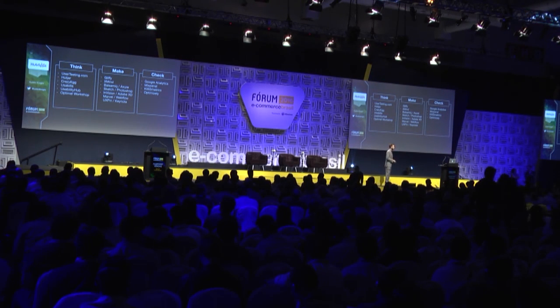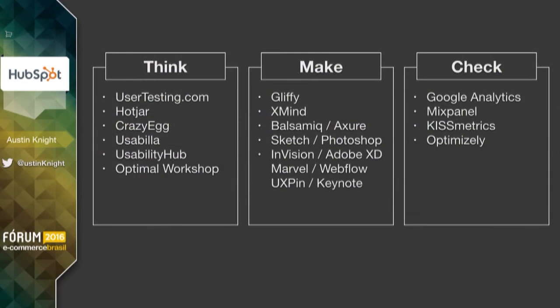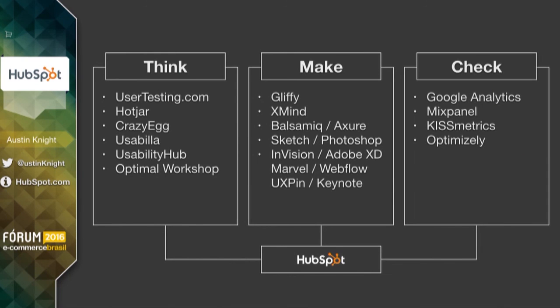Sketch and Photoshop are the most common tools for higher-fidelity mock-ups. And there are a ton of prototyping tools — InVision, Adobe XD, Marvel, Webflow, UX Pin, and even Keynote, which comes on any MacBook you buy, can be used for creating prototypes. When you get to the Check phase and are ready to see how things performed, Google Analytics is completely free. Mixpanel is a good custom implementation if you want to have stuff that goes between software and your site. Kissmetrics is a really good funnel creation tool. And Optimizely is a nice A/B testing tool. If you get to a point where you want to do all of this in a single spot, you can use a tool like HubSpot — we've actually built our platform around this entire ethos.